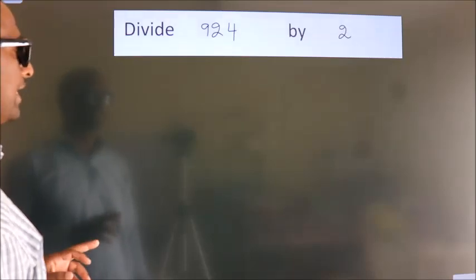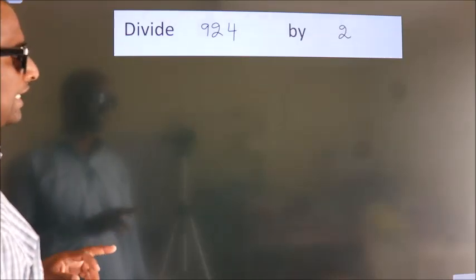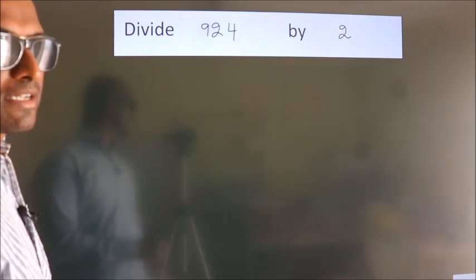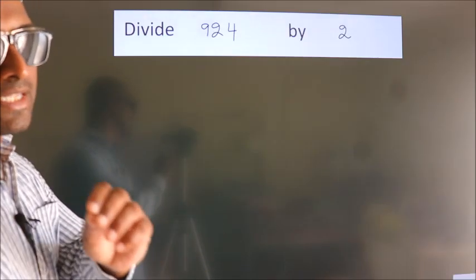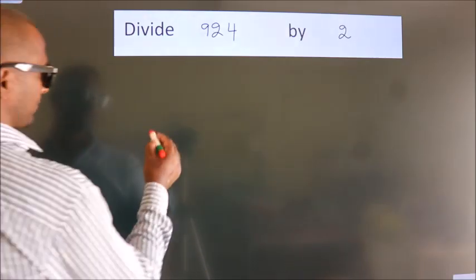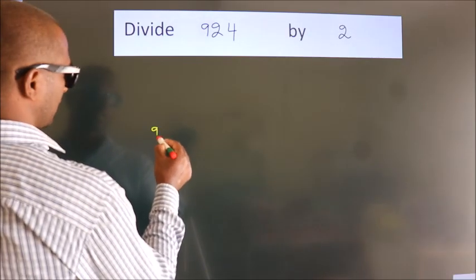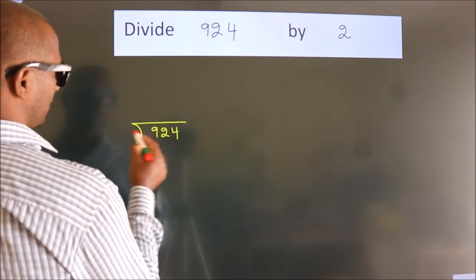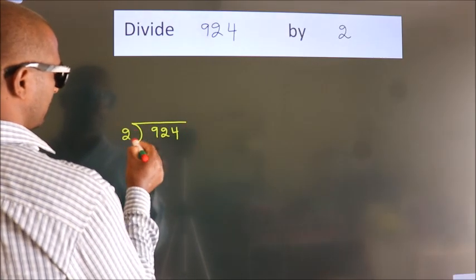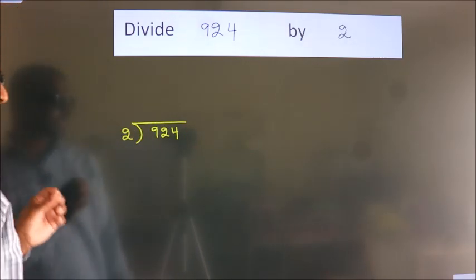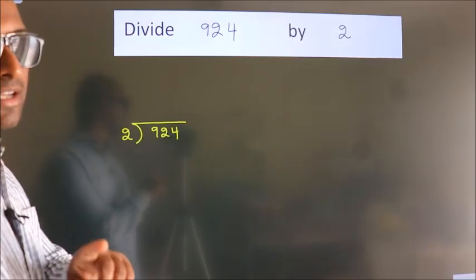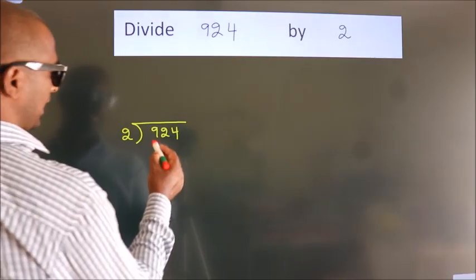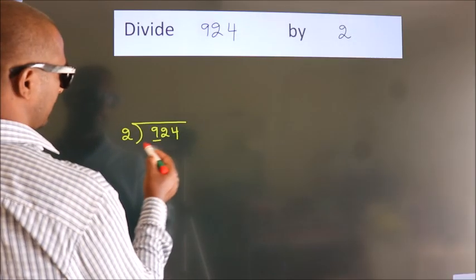Divide 924 by 2. To do this division, we should frame it in this way: 924 here, 2 here. This is your step 1. Next, here we have 9, here 2.